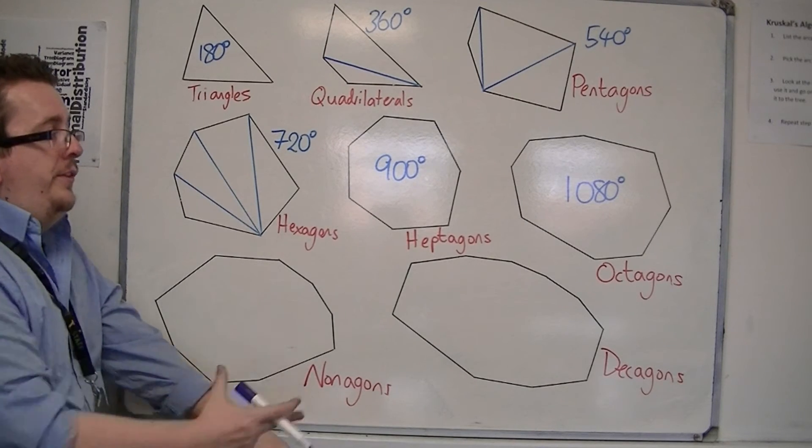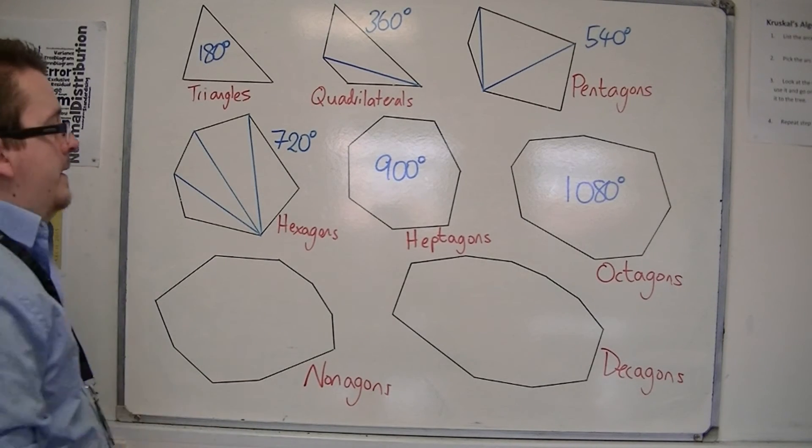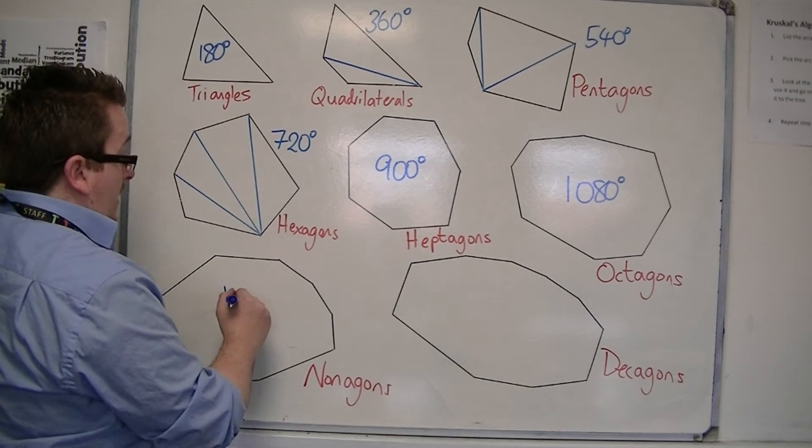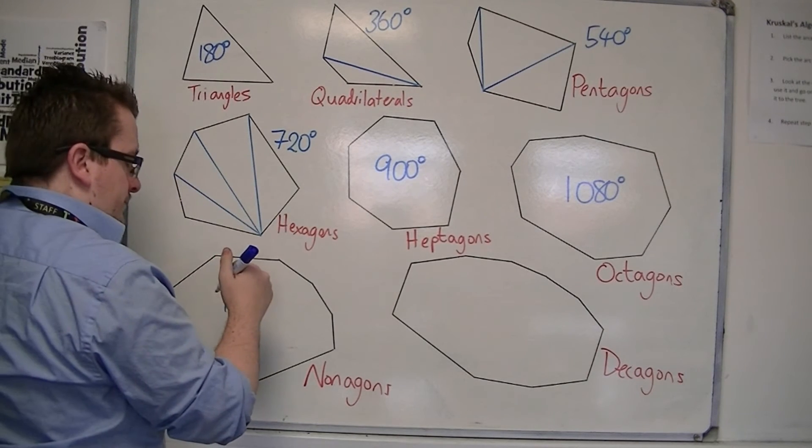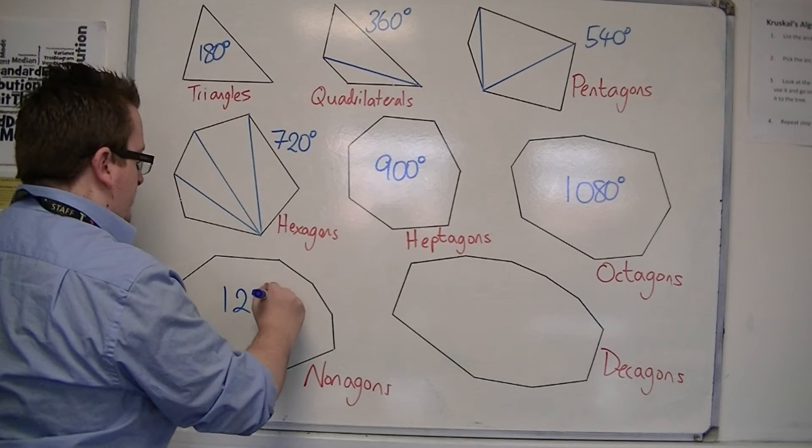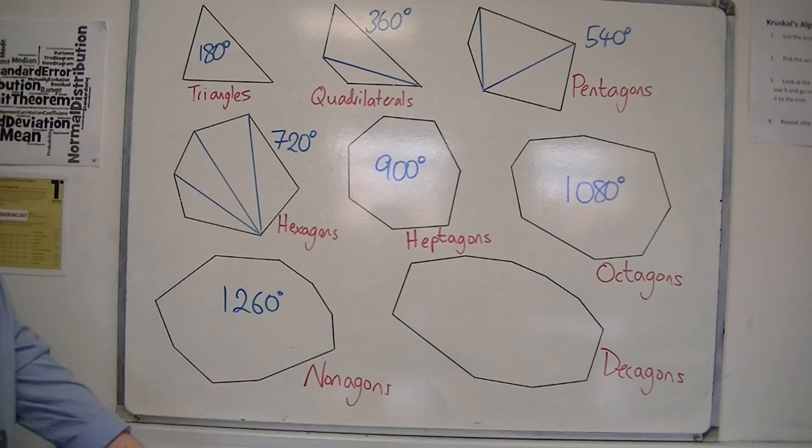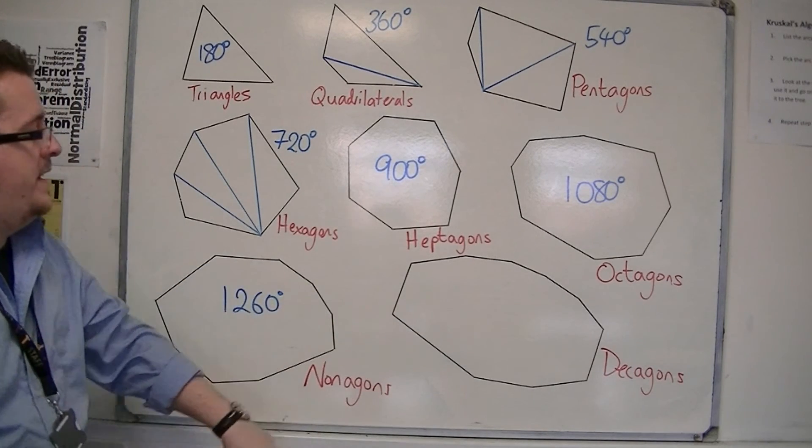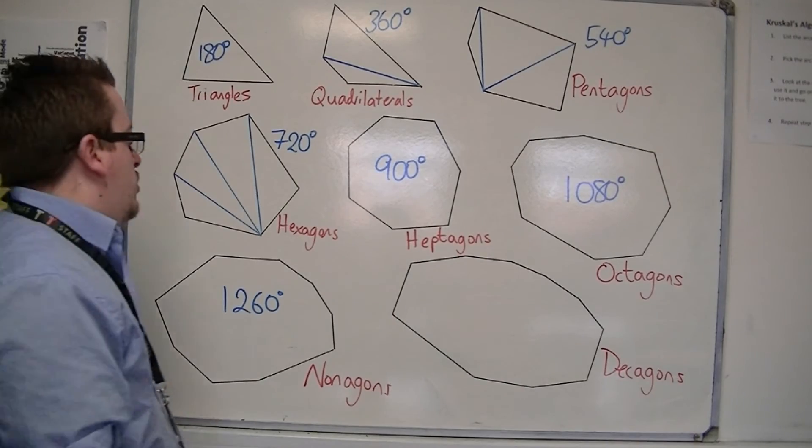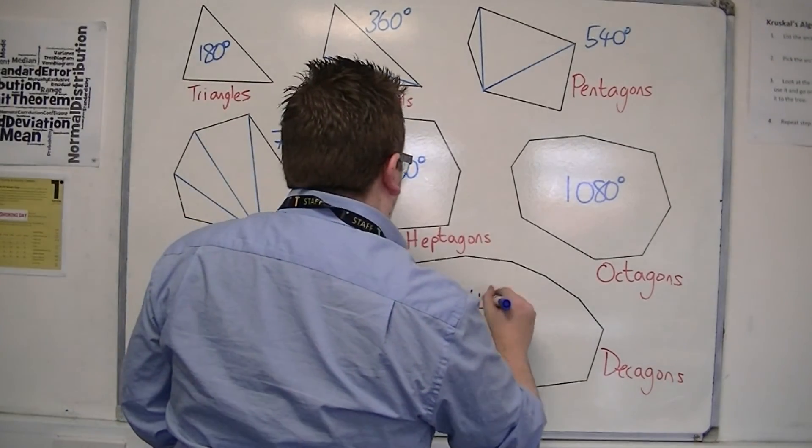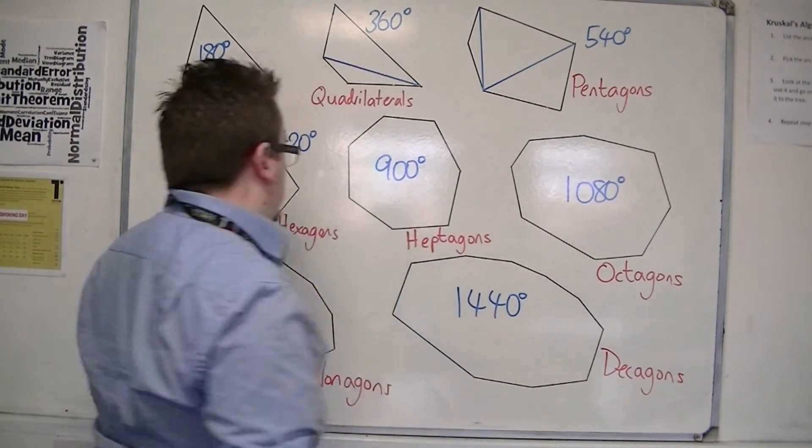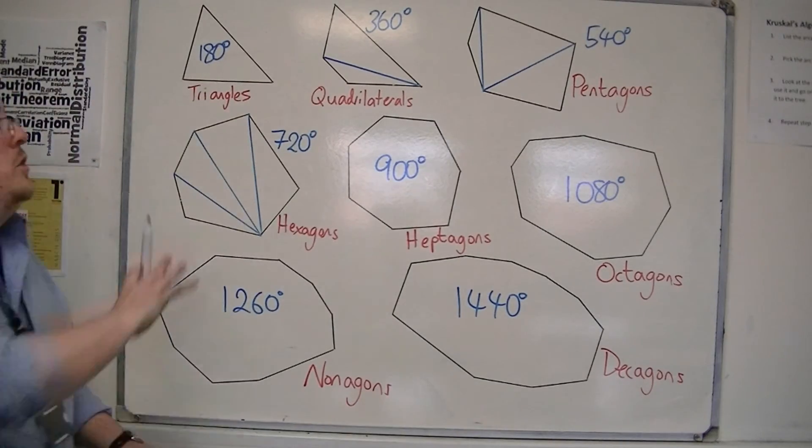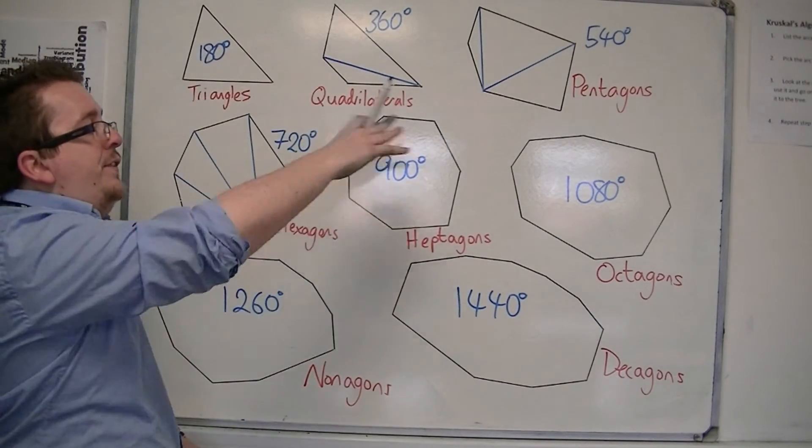Then you've got the nonagons, so add another 180. So that's 1260. And then add on another 180 for the decagons, which gets us to 1440 degrees. So each time you're adding on 180 degrees to get to the next one.